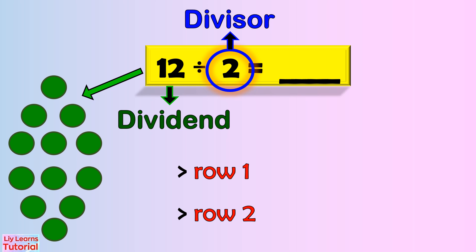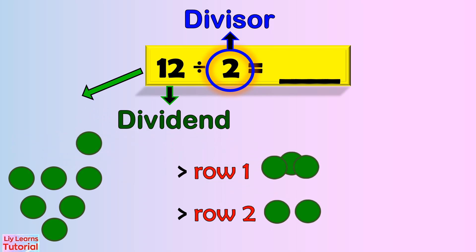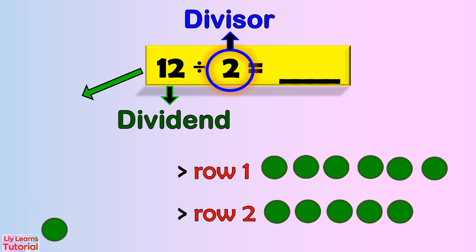Two is the divisor and tells you how many groups the objects will be shared into. Let us split the objects into two equal parts and arrange them in two rows. I'm going to go one, two, three, four, five, six, seven, eight, nine, ten, eleven, twelve.